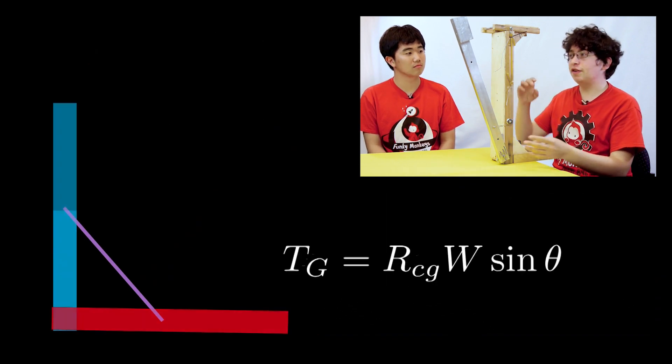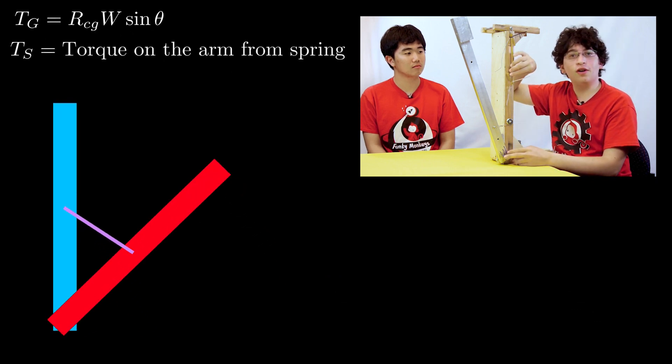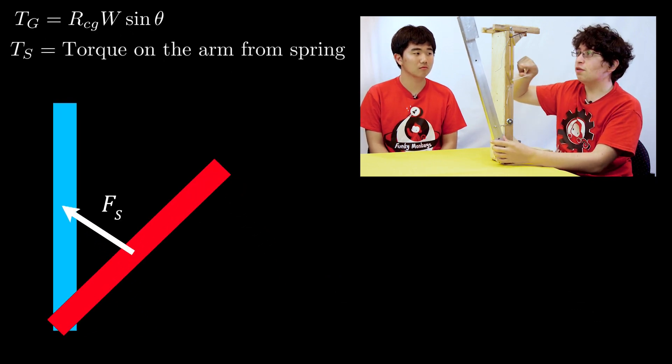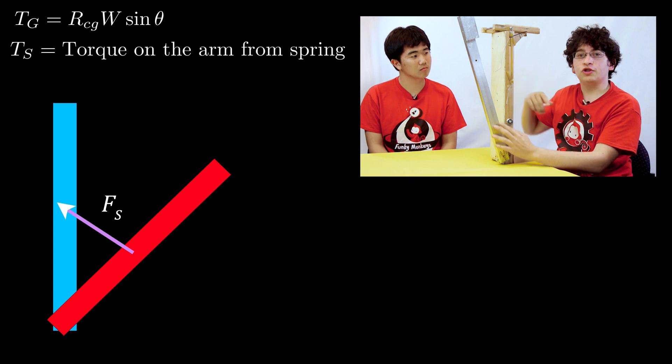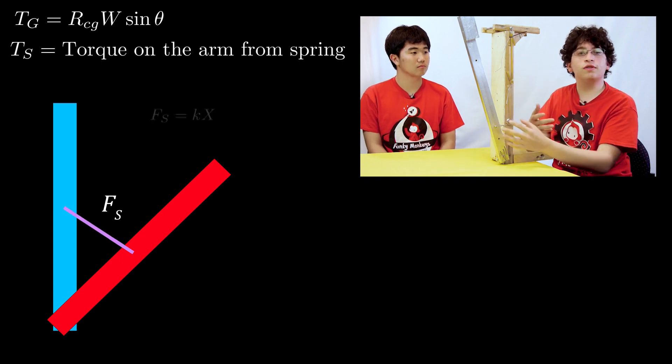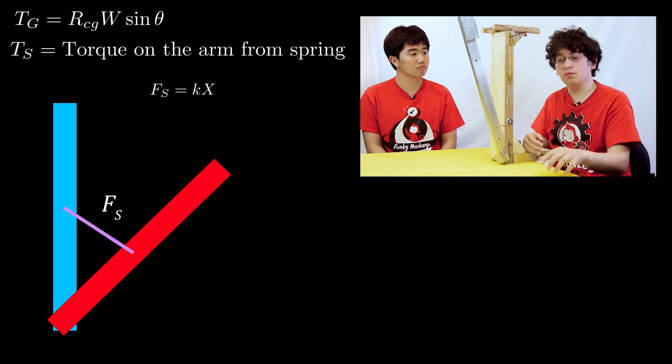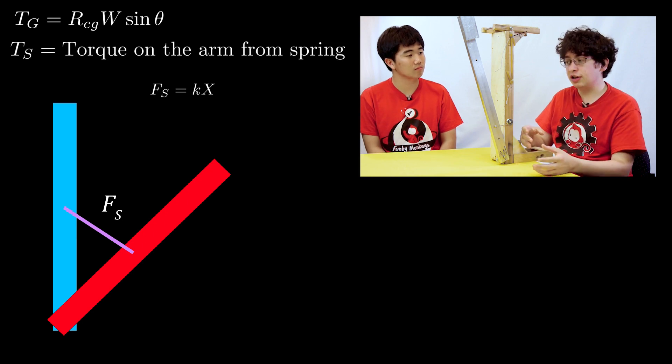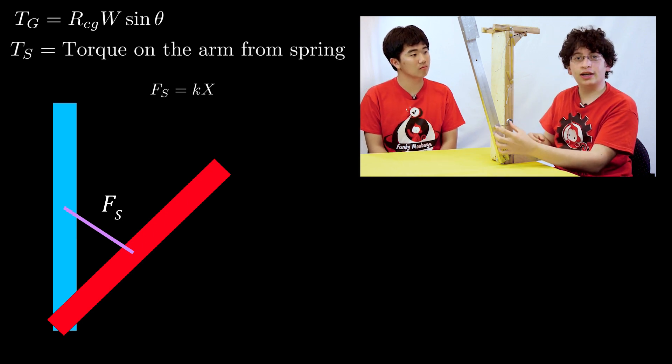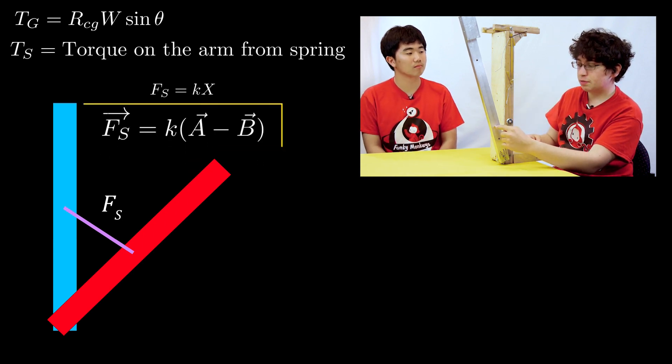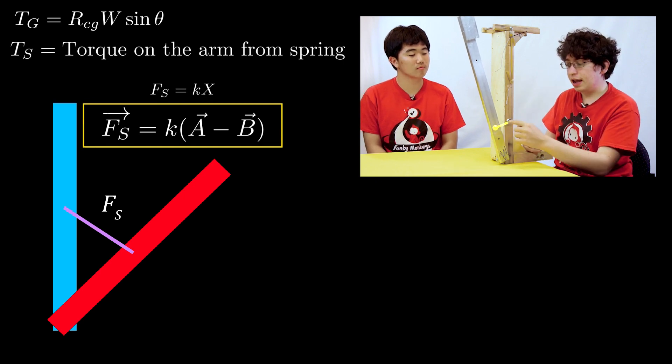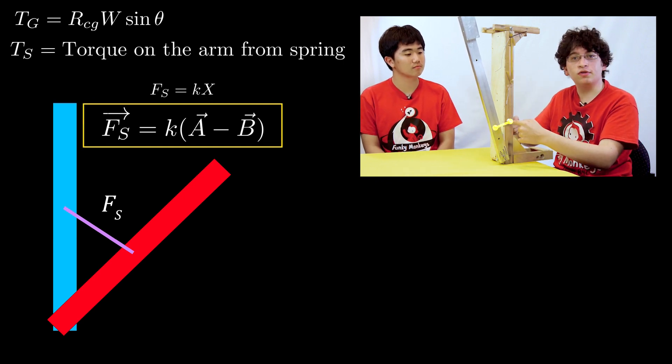The second step is to find the torque of the spring on the arm. To do that, you need to know the force of the spring. So for springs that follow Hooke's law, the force of the spring is the spring constant multiplied by the length of stretch. And with this geometry setup, the length of stretch is the distance between an attachment point on the arm and some attachment point on a vertical support.